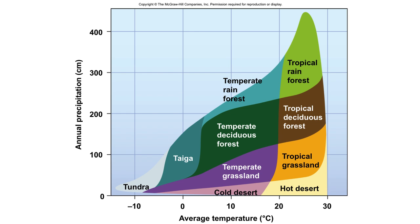This next diagram is called the Whittaker diagram, and it lumps all of the biomes together, showing the different ranges of temperature and precipitation. The tundra biome receives the least amount of precipitation and has a very low average temperature. The tropical rainforest, on the other hand, receives the most precipitation and has the warmest temperatures. Precipitation is shown in centimeters and temperature in degrees Celsius.